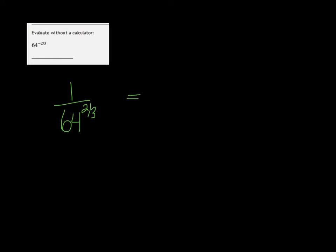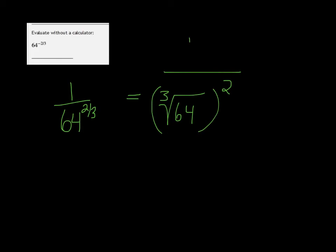This is going to be the cube root of 64 squared, if you rewrite that rational exponent. The bottom number is going to be the root, and the top number is your power. The cube root of 64 is just 4. 4 squared would give you 16, so you get 1 over 16.